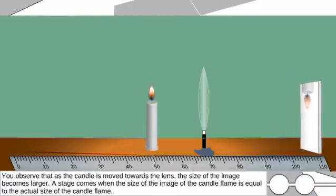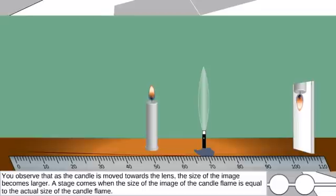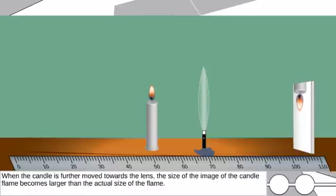You observe that as the candle is moved towards the lens, the size of the image becomes larger. A stage comes when the size of the image of the candle flame is equal to the actual size of the candle flame. When the candle is further moved towards the lens, the size of the image of the candle flame becomes larger than the actual size of the flame.